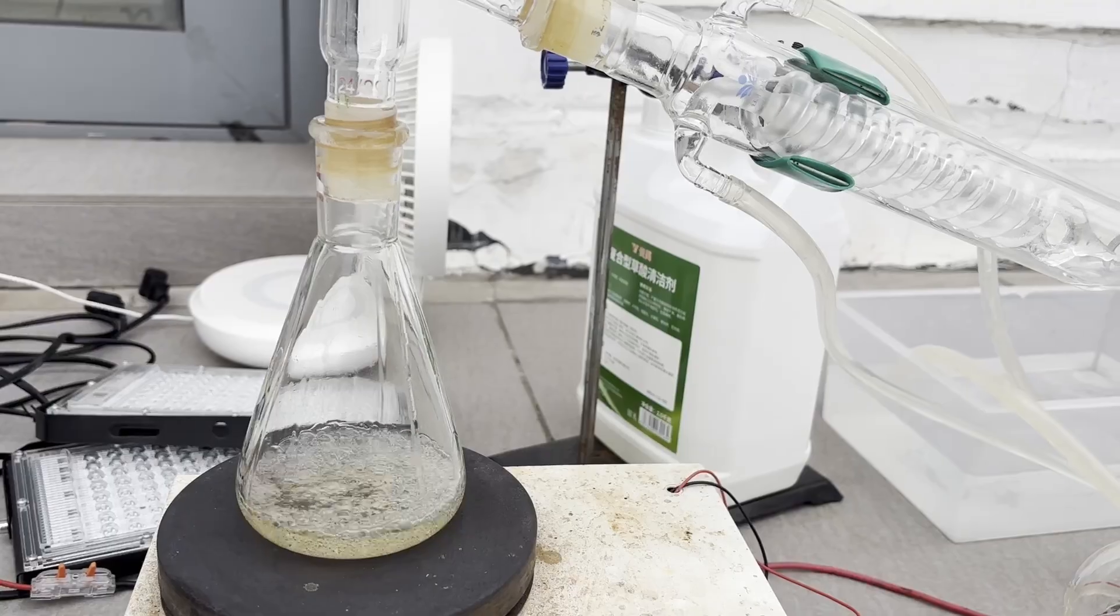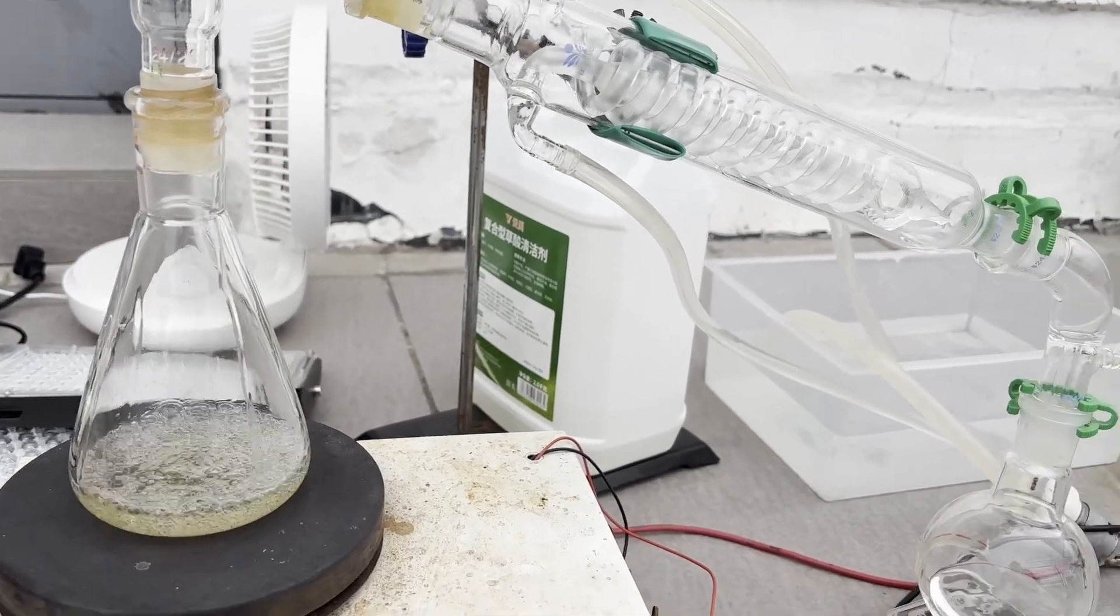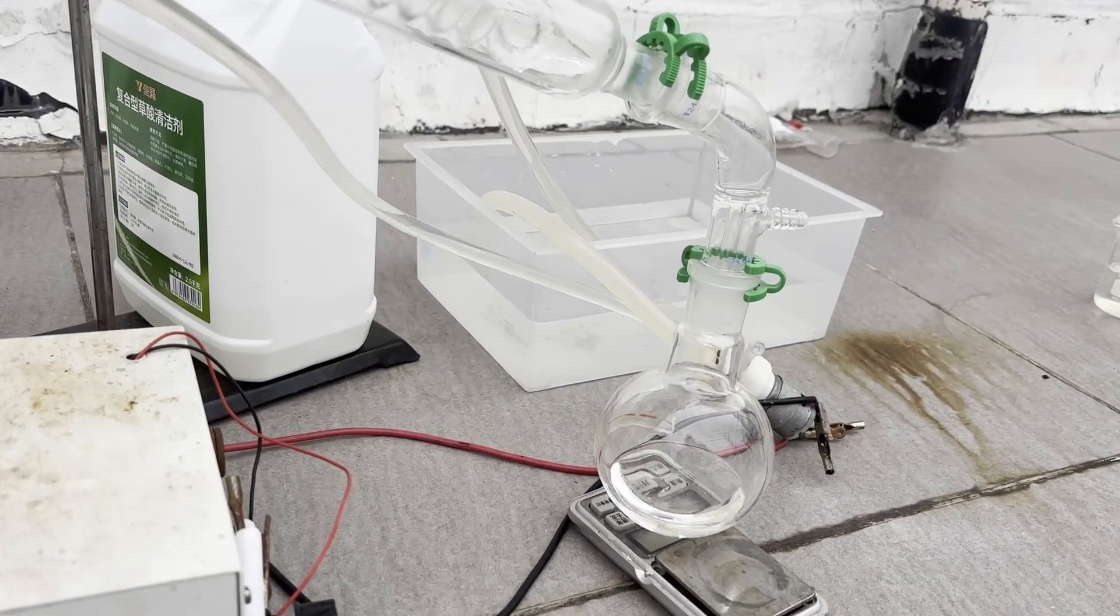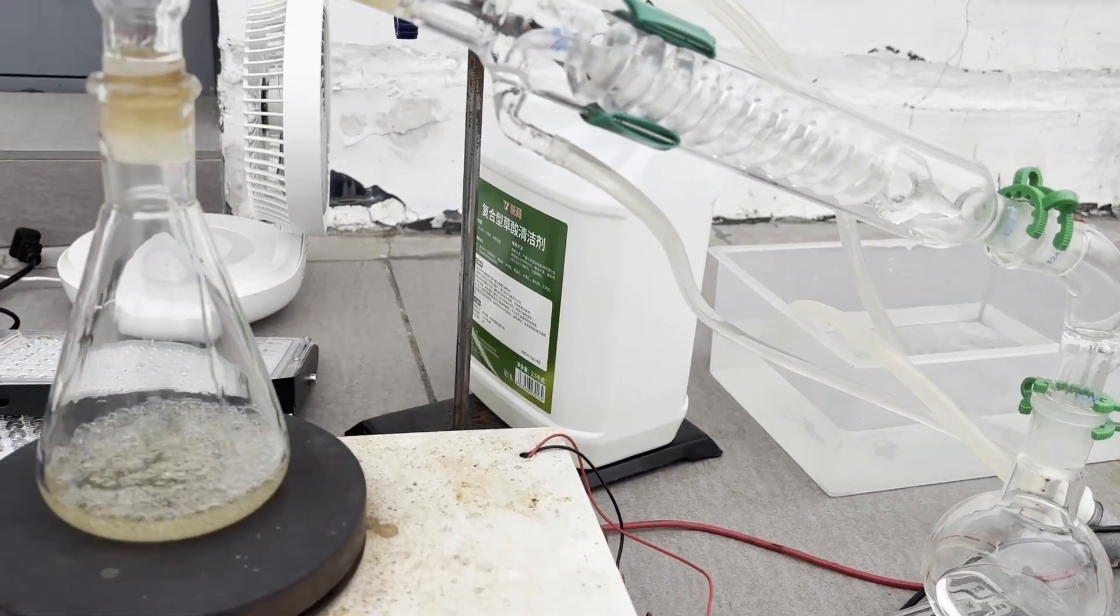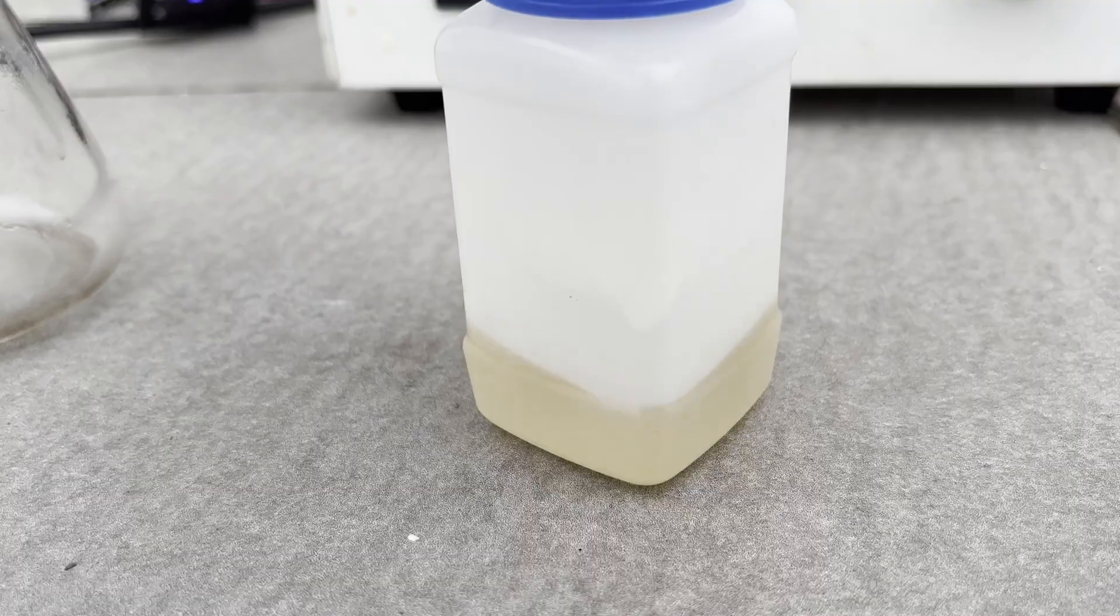I heated it up with the help of insulation to remove the last traces of solvent and allowed the flask to cool down to roughly 80 degrees C. Triphosgene solidifies at 71 degrees C, so I quickly poured the liquid triphosgene into a plastic bottle for storage.